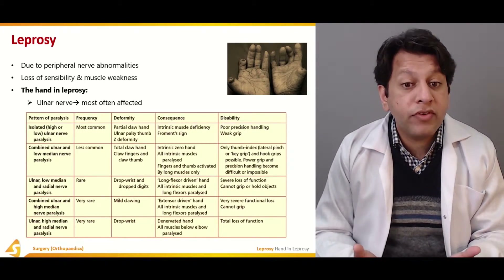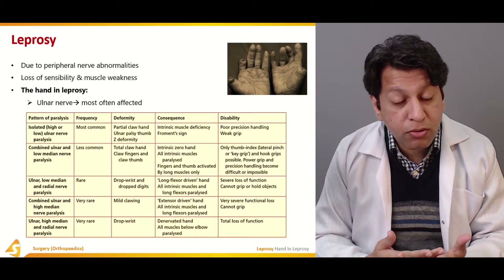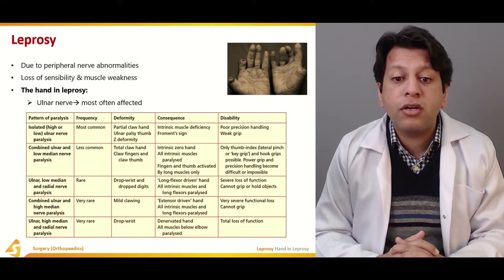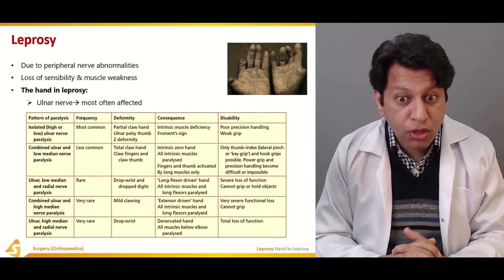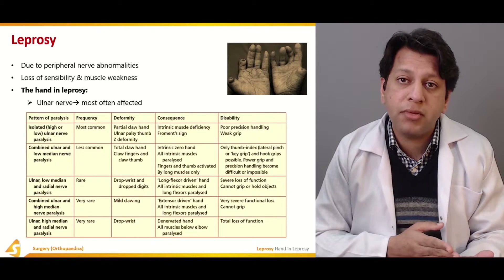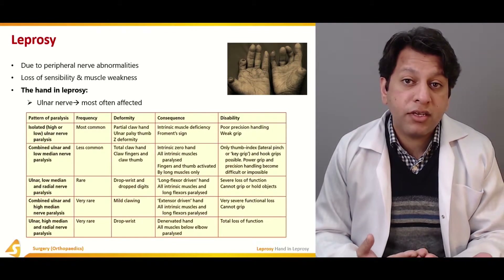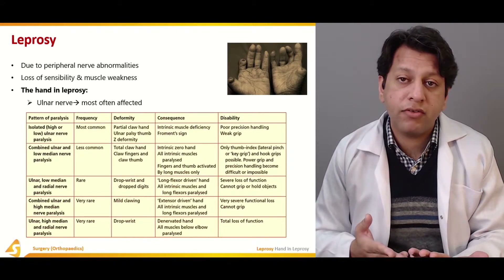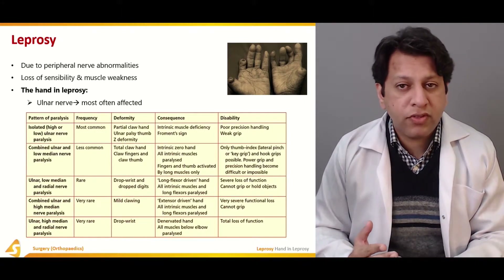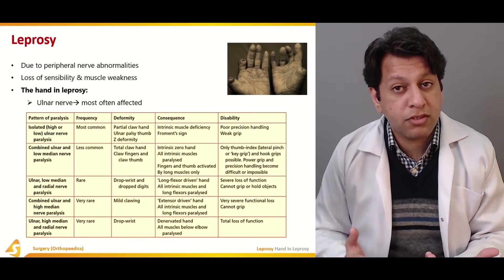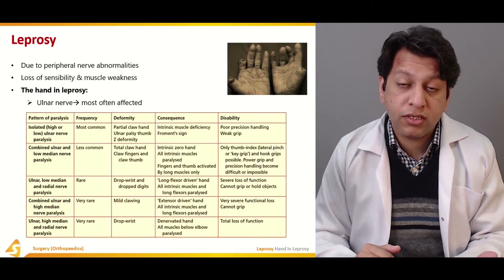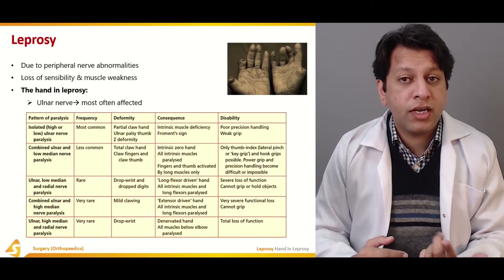A combined ulnar and lower median nerve injury is less common but possible, resulting in a total claw hand, claw fingers, or even a claw thumb. The thenar eminence supplies the radial two and a half fingers via the median nerve, while the ulnar one and a half fingers are supplied by the ulnar nerve. This leads to thenar and hypothenar atrophy, loss of intrinsic muscles, and paralysis of FDS of all four digits and FDP of the index and middle fingers.